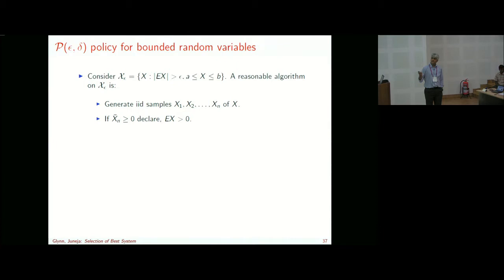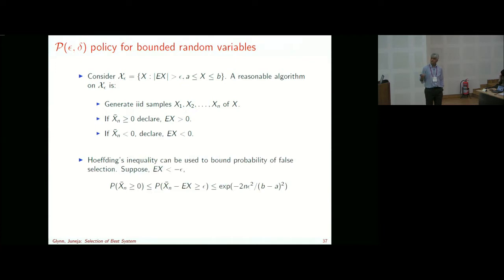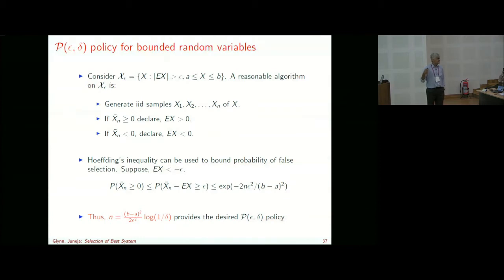Potentially large deviation rate functions or other information from generated samples could further improve things in practice — that's a direction worth exploring. In conclusion: we discussed a light-tail setting where probability of false selection decays at an exponential rate, suggesting order log(1/delta) algorithms may be feasible. However, we showed through negative results that order log(1/delta) algorithms are not possible for unbounded support distributions without further restriction. Under explicit restrictions on moments of underlying random variables, one can design such algorithms.